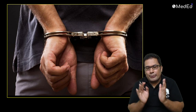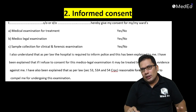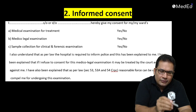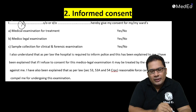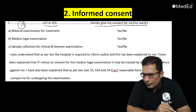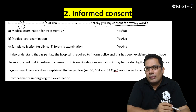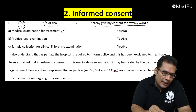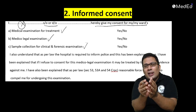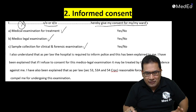Next is informed consent. You need to take consent during the examination. Write it as: 'I, [name], son/daughter of [name], hereby give my consent for medical examination, treatment, medico-legal examination (forensic examination), and sample collection.' The samples will be sent to the clinical laboratory or forensic laboratory. You need the consent from the accused.